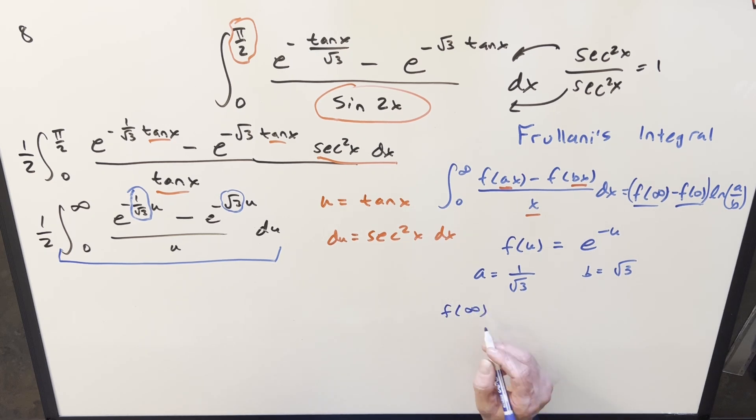And then we'll check these values. For f of infinity, this notation is kind of shorthand what we want to really look at here. Let's look at this as a limit as u is going to infinity of e minus u. Well, clearly, this is going to 0 really fast. So that's going to be a 0 there. And then let's evaluate our f of 0 value. That's just going to be e to the 0, or just 1.